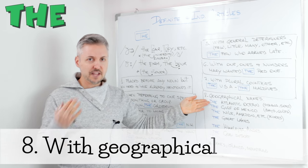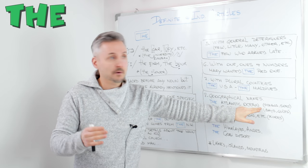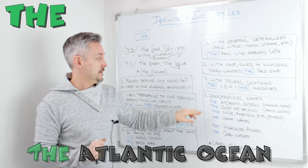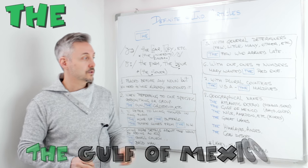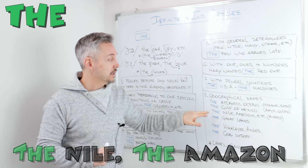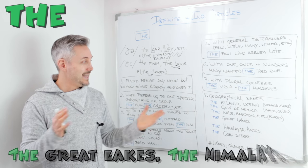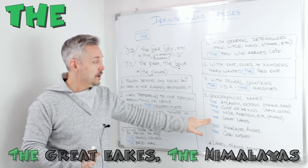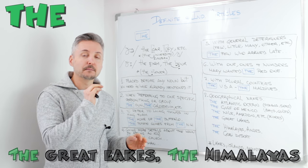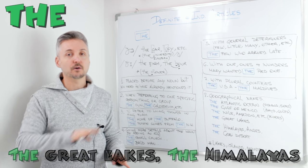With geographical names — and this is the last rule. 'The Atlantic Ocean.' With oceans and seas — 'the Mediterranean', etc. 'The Gulf of Mexico' — with bays and gulfs. With rivers: 'the Nile', 'the Amazon', etc. With groups of lakes: 'the Great Lakes'. But we don't use 'the' with Lake Ontario — we say 'Lake Ontario', without an article.